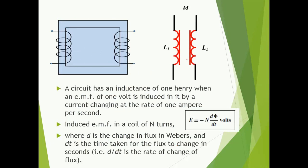Here is an example of mutual inductance. If the current changes in one winding, the change in flux is going to occur. How to calculate the EMF induced — the formula is E is equal to minus N dφ/dt, where N is the number of turns in the coil and dφ/dt is the change in flux given in Weber per second.